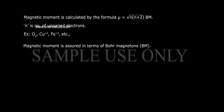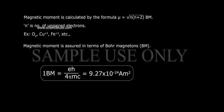Magnetic moment is measured in terms of Bohr magnetons (BM). 1 BM = eh/4πmc = 9.27 × 10^-24 ampere meter square.